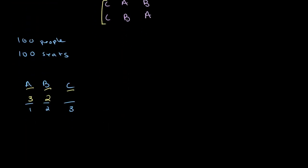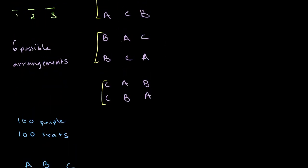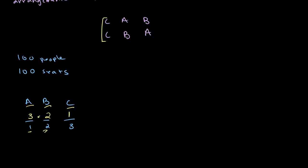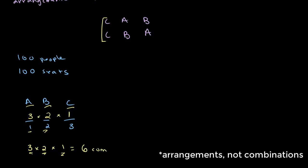So for each of the three combinations in seat one there are two different combinations in seat two. In our third seat there is only one possible combination left, because if we already know who's sitting in seats one and two then only one person is left for seat three. For example, if person A is in seat one and person B is in seat two, only C is left for seat three. This gives us three times two times one — for each of the three possibilities in seat one, we have two in seat two, and one in seat three — giving us an answer of six combinations.